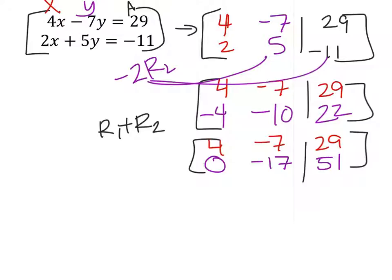Now, what I would want to do is to get a 1 where that negative 17 is. And to do that, I'm simply going to take row 2, and I'm going to multiply it, or divide it, rather, by a negative 17. You could multiply it by 1 over negative 17, it wouldn't matter.